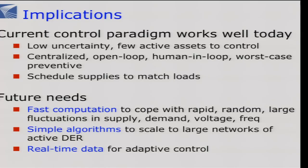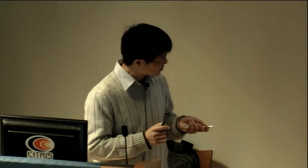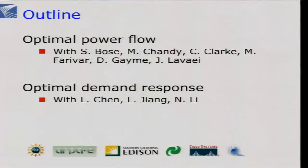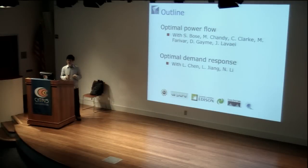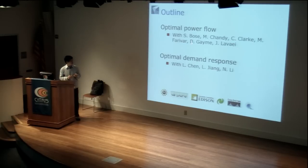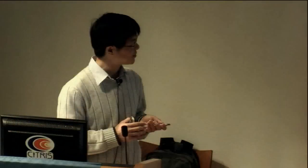What I'll talk about today — especially the first part — is how do we work towards faster computation in the context of optimal power flow. Power flow is extremely important. It's a fundamental problem that underlies many management and control issues in power networks. This is joint work with Bose, a graduate student at Caltech; Professor Manning Chandy; Chris Clark, an engineer at Southern California Edison; Fariva, also a graduate student; Denise Gamy, now a professor at Johns Hopkins; and Javad, now a postdoc at Stanford.